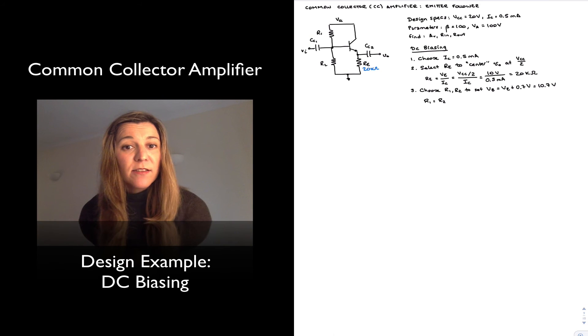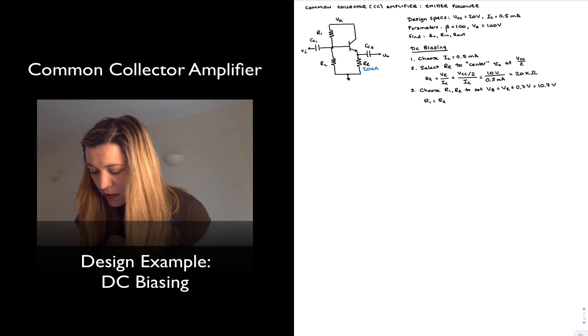The only thing that's going to happen is that instead of my emitter voltage sitting at exactly 10 volts, it's just going to be sitting at 0.7 volts below that, which is still fine. So I'm going to choose R1 equal to R2.